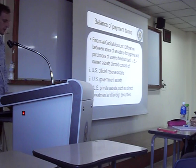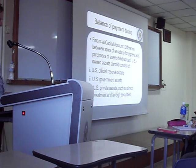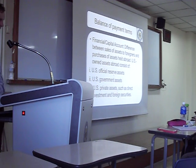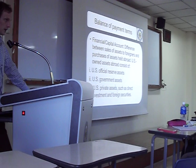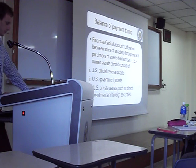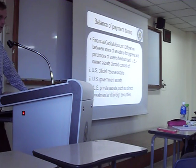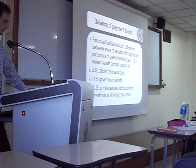In the financial and capital account, this is the difference between the sale of assets to foreigners and purchases of assets held abroad. US assets include reserve assets, US government assets, and US private assets. The US government could buy land in Korea for the military; US companies can buy a company in Korea; a US person could buy stocks in Korea; the US government buys euros or gold — all included here.